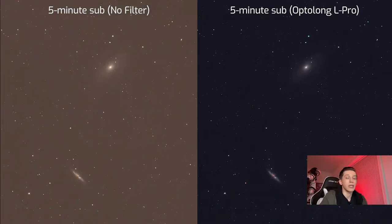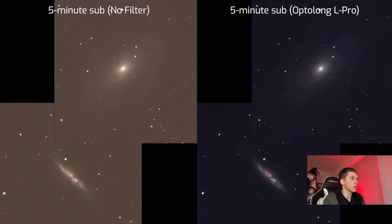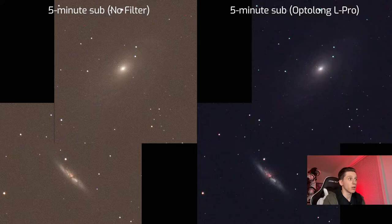On the right side of the screen there is another five minute sub that was taken using Optolong L-Pro filter, and that picture is noticeably different from the picture without the filter. The background sky is darker, the contrast ratio has become much better, and we can see that galaxies appear really well on that picture.